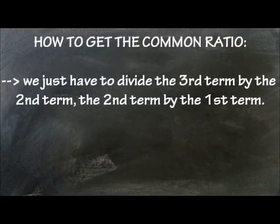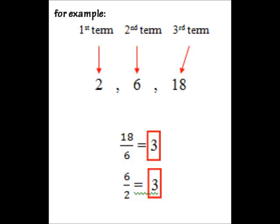To get the common ratio in a geometric sequence, we just have to divide the third term by the second term, second term by the first term. For example, given 2, 6, 18, 18 divided by 6 is 3, and 6 divided by 2 is 3.